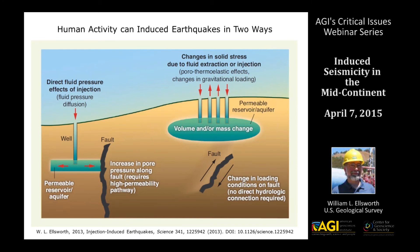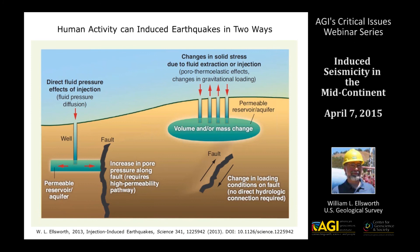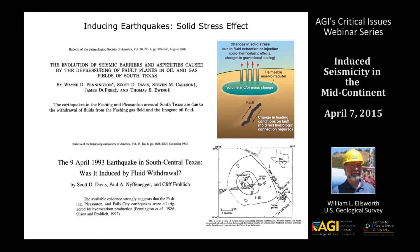Human activity can induce earthquakes in several well-understood ways. The first is the direct fluid pressure effect: by raising pressure underground, we can reduce the clamping stress on the fault, allowing it to come to failure. The other way is by changing the shear stresses — for example, if we pull mass or volume out of the ground, it can load a fault to failure. This solid stress effect has been understood for a long time, as shown by a 1986 paper and a 1995 paper studying oil fields in South Texas, both demonstrating earthquakes induced by withdrawal of fluids.